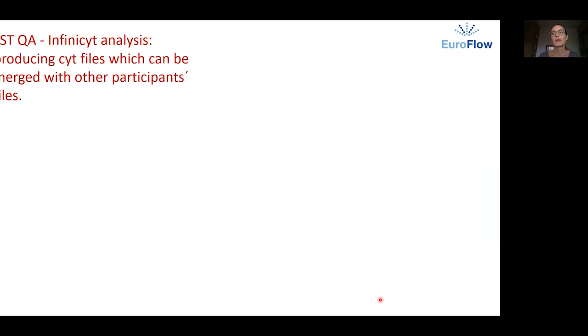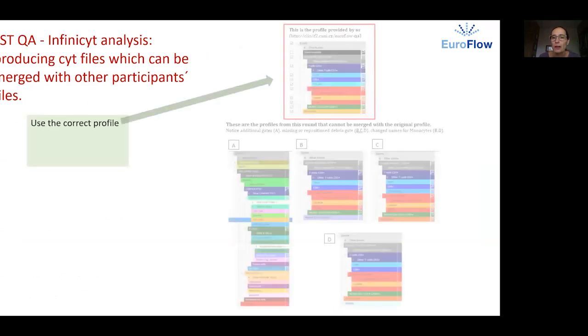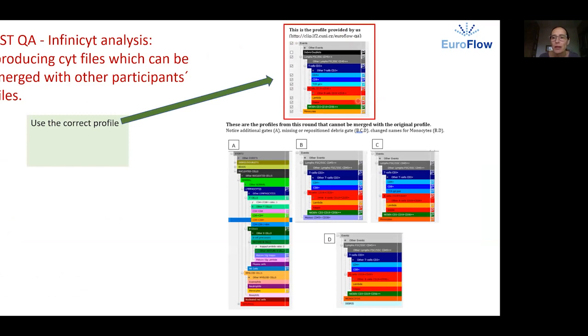Now I describe some common problems in LST reporting. In order to produce SID files which we can merge with files from other participants it is important to use the correct profile here in red which is provided in the LSTQA instructions. These are the examples of incorrect profiles containing additional gates with missing or repositioned debris gate or renamed monocyte populations.